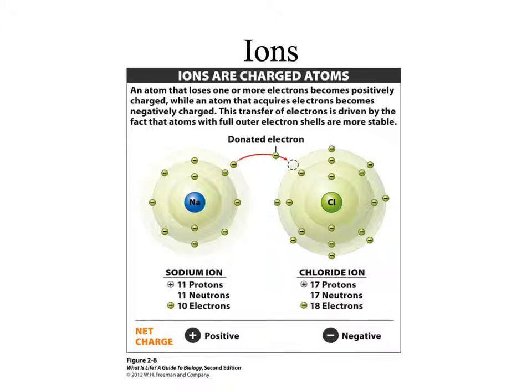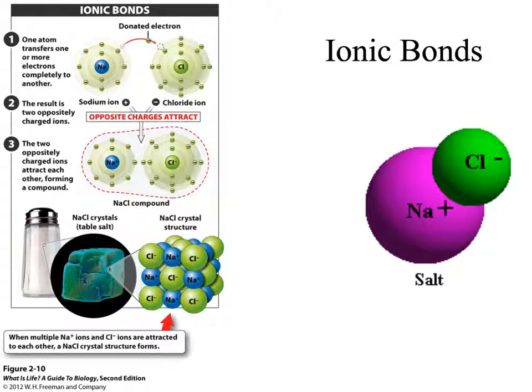This transfer results in sodium having more protons than electrons, therefore the sodium ion is now positively charged. Because chlorine accepted an electron, it now has one more electron than it has protons. Therefore, the chlorine is going to be a negatively charged ion. Once we have these charged particles, the charges are attracted to each other. Remember, opposites attract just like in magnets.